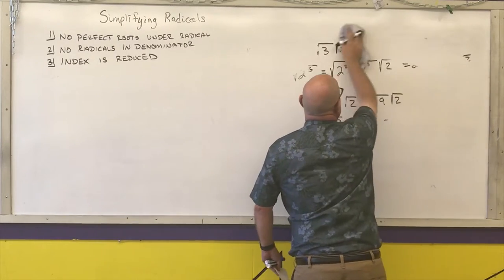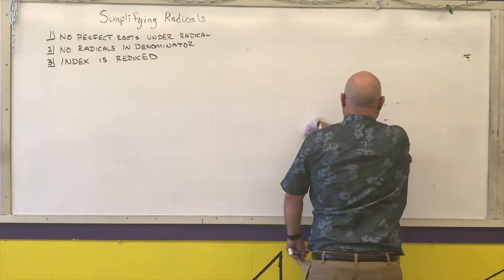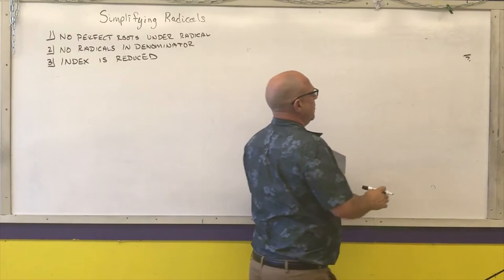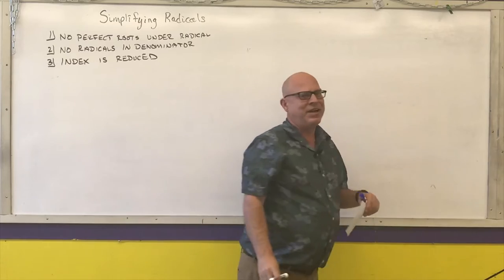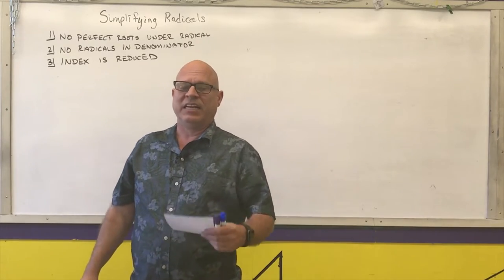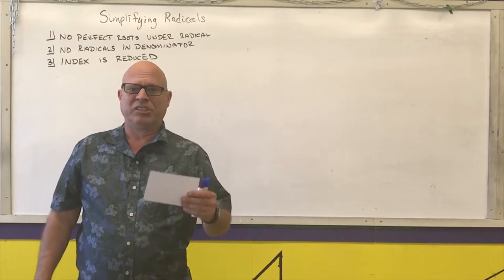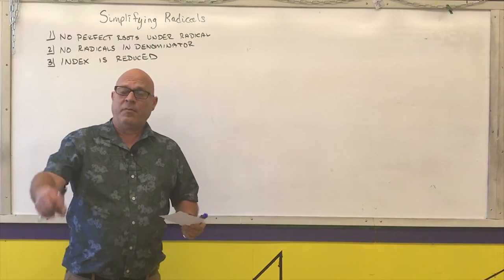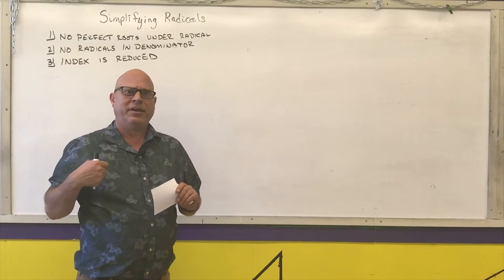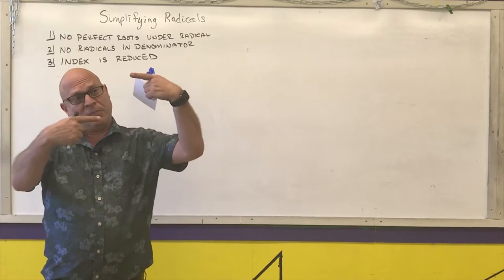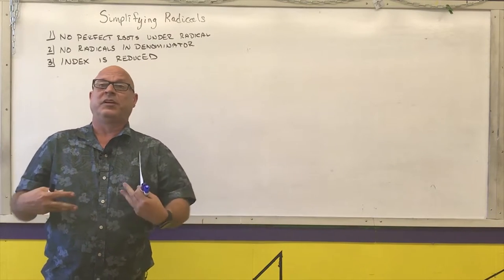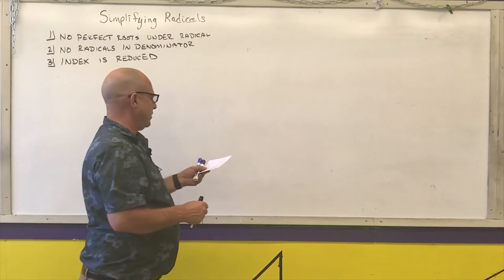To get rid of radicals in the denominators of fractions, we are going to multiply by conjugates in most cases. Basically, I want to multiply by something that's going to get rid of the root in the denominator. If I multiply the denominator by something, I have to multiply the numerator by the same thing — so I'm multiplying by a special form of 1.